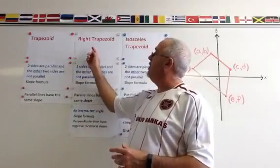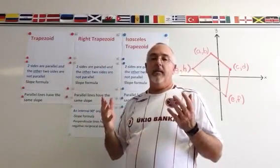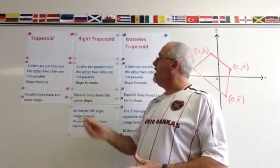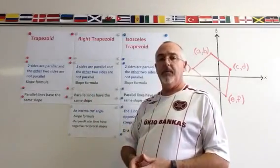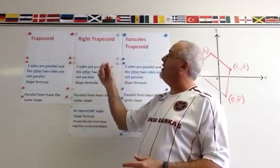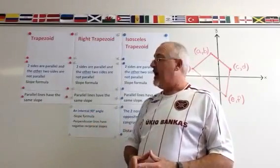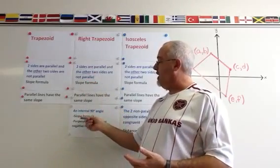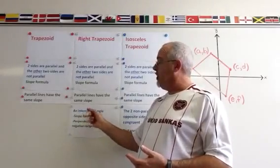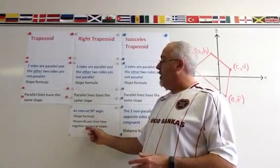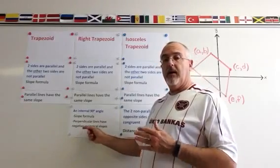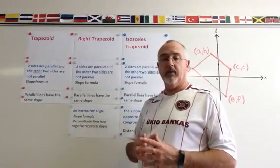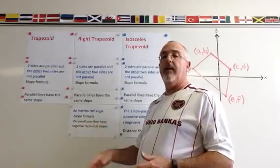When we are asked to prove that we have a right trapezoid, the beginning of the process is the same as proving that it's a trapezoid. We prove that we have two sides parallel and that the other two sides are not, using the slope formula and the fact that parallel lines have the same slope. But we must also prove that it has an internal 90 degree angle. The way to do that is again using the slope formula. We still have to state that we are using the slope formula to prove an internal 90 degree angle, and we have to show that two perpendicular lines exist inside the trapezoid by showing that those two lines have negative reciprocal slopes.